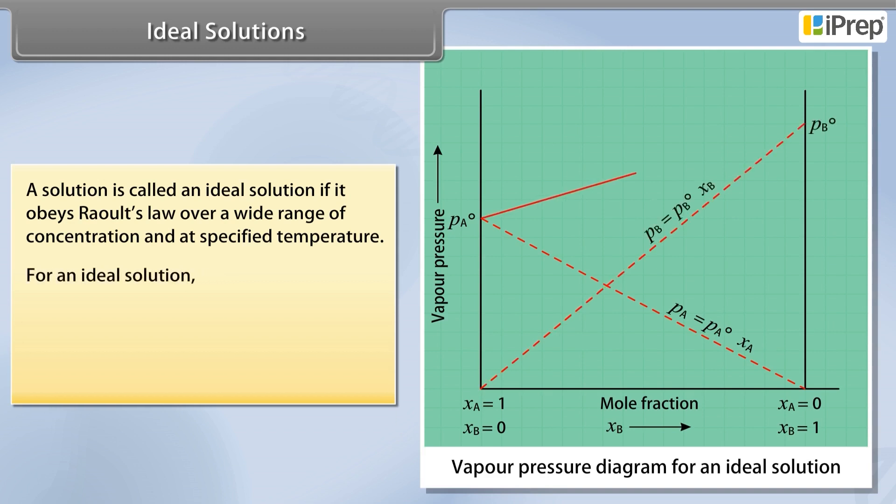For an ideal solution, P is equal to Pa plus Pb. It can be written as P equals Pa0 into Xa plus Pb0 into Xb.